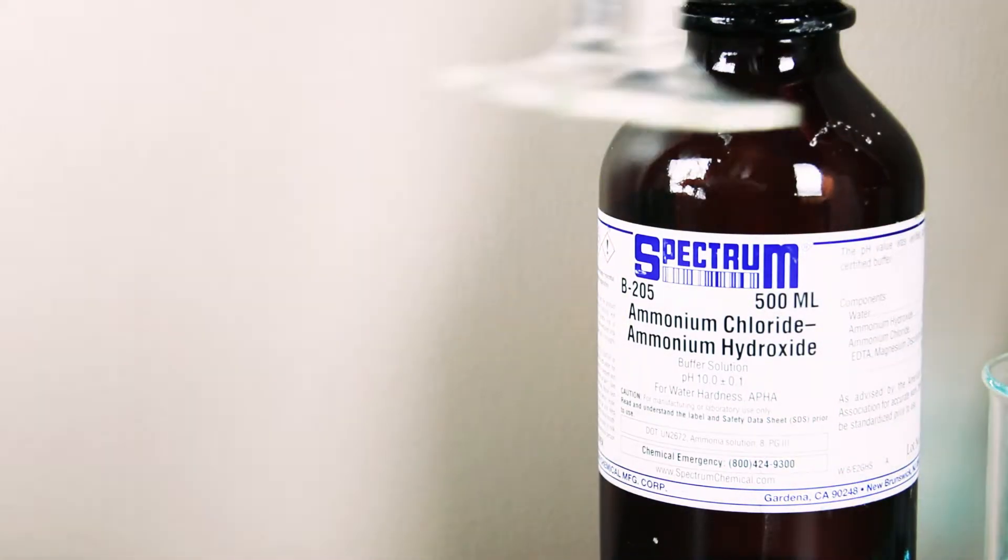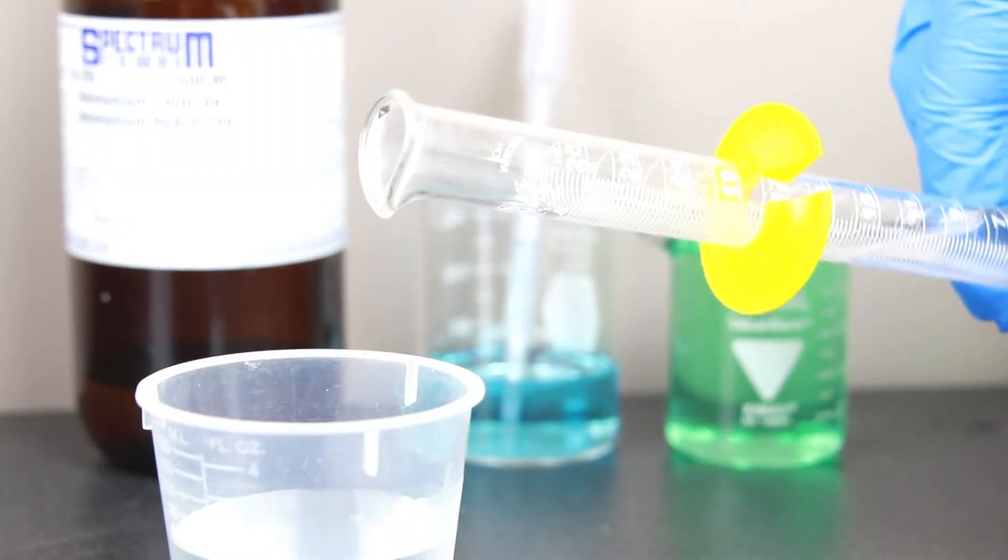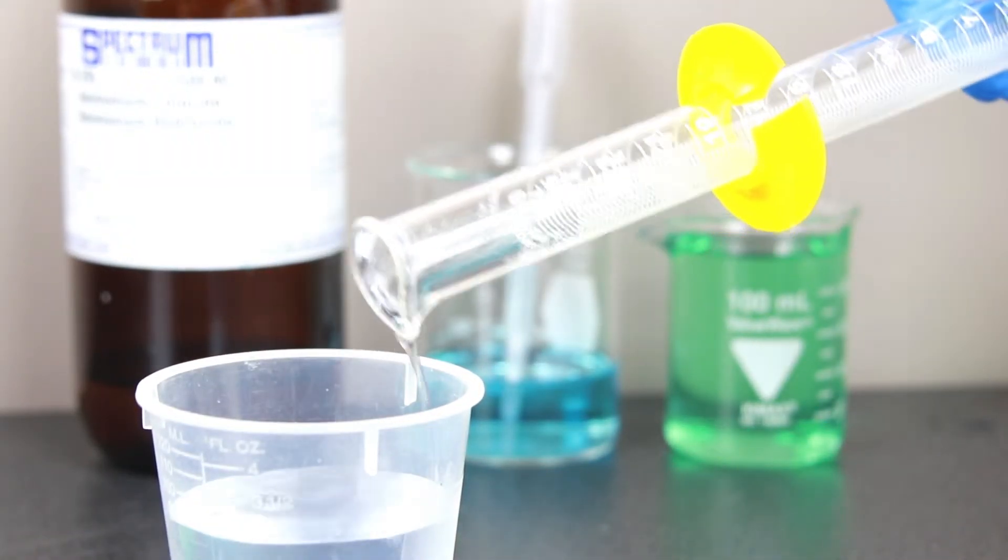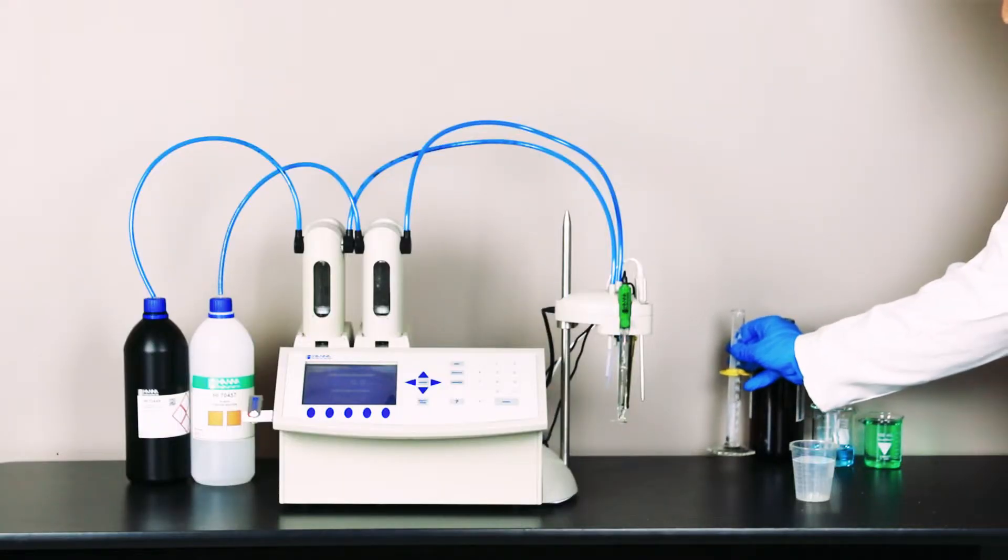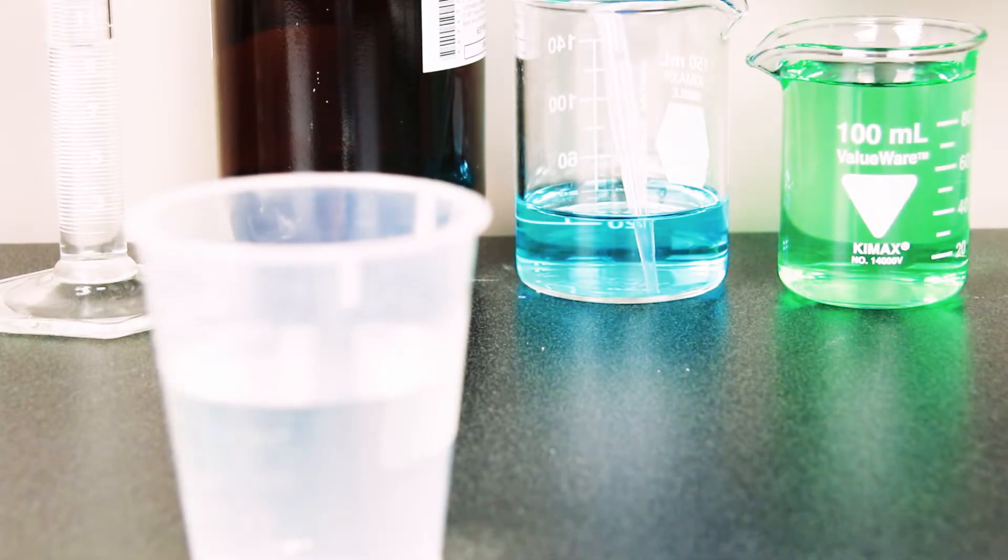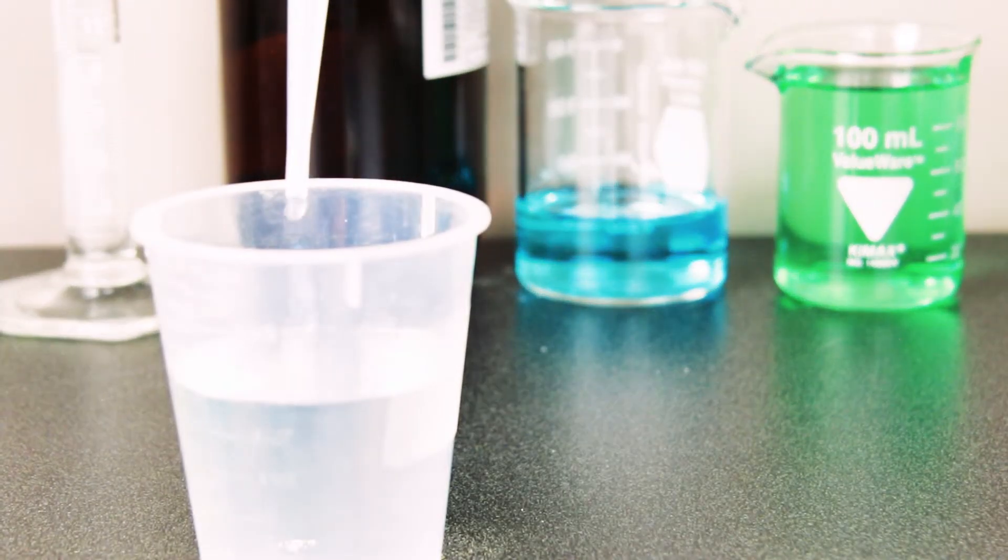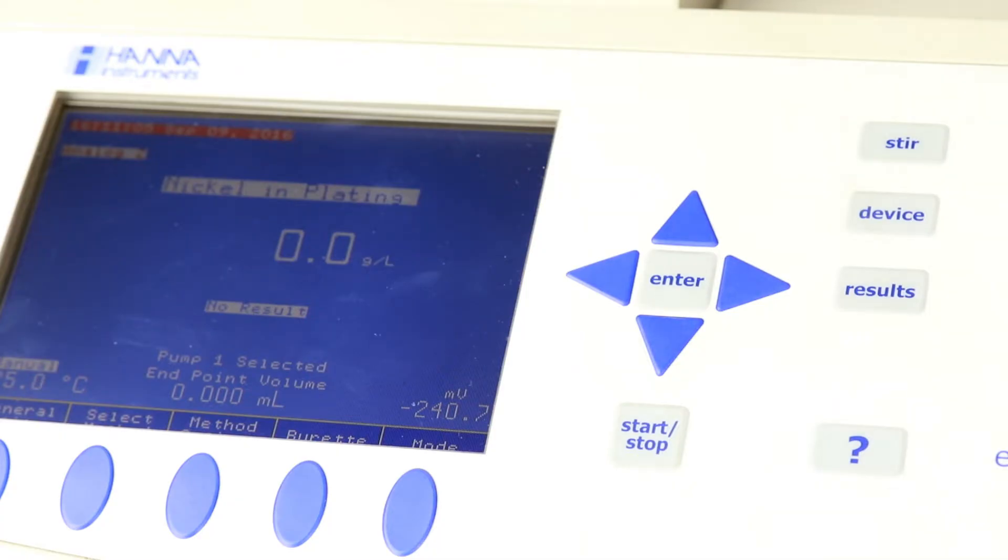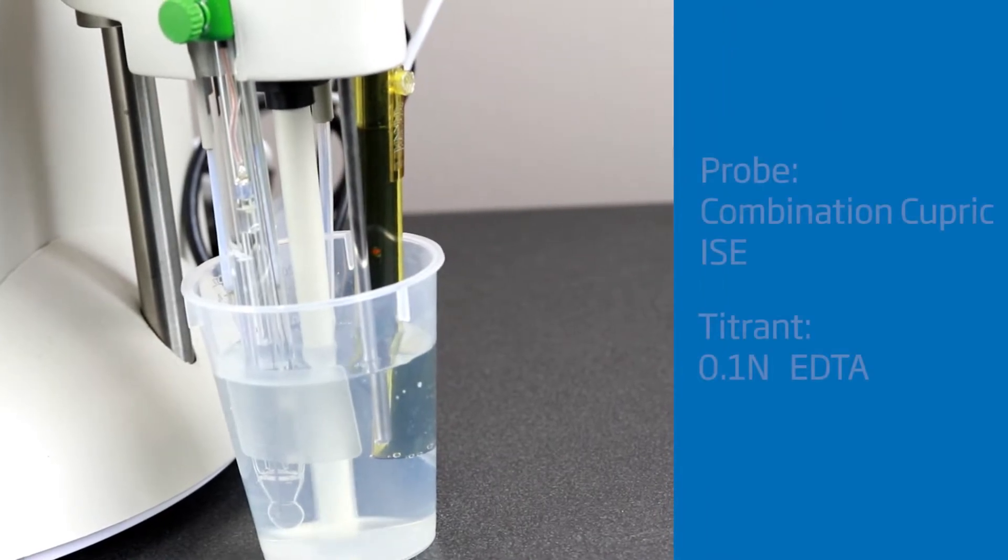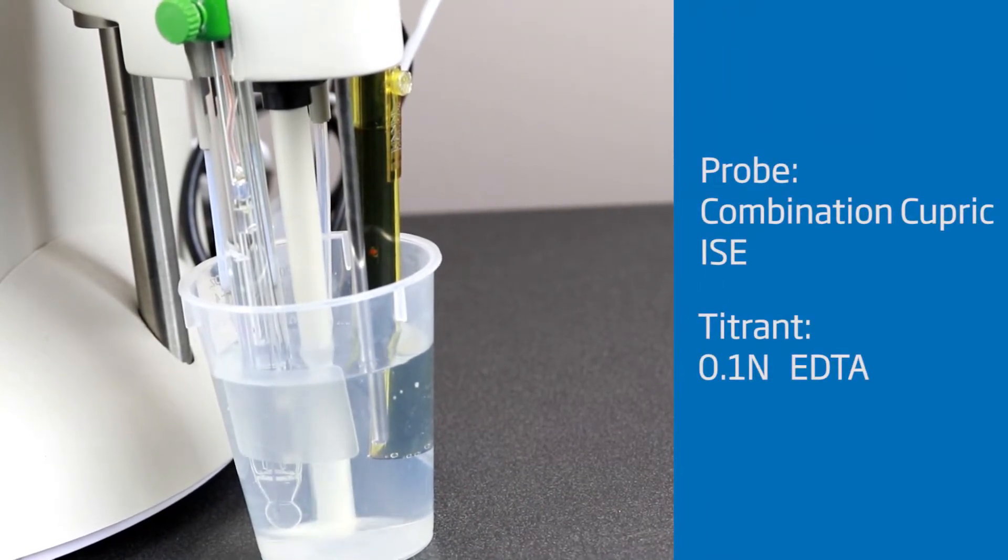Next, add ammonium hydroxide ammonium chloride buffer. Finally, add a few drops of copper EDTA. Now, just press the start button to titrate the sample automatically. This method uses EDTA to complex nickel in the sample to an equivalence point.